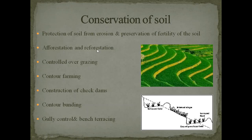Can we conserve the soil? Yes, it is possible. Conservation of soil means the protection of soil from erosion and preservation of the fertility of the soil. How to conserve soil: first, afforestation and reforestation — growing more and more trees helps hold the soil tightly. Second, controlled overgrazing — since overgrazing is a cause of soil erosion, we have to control it.